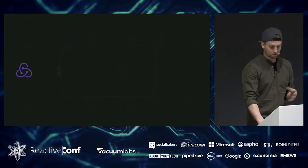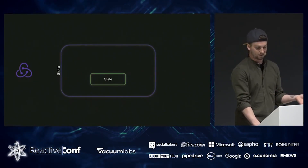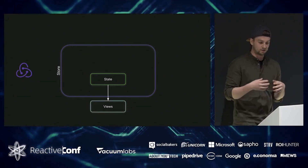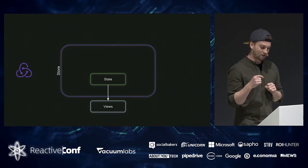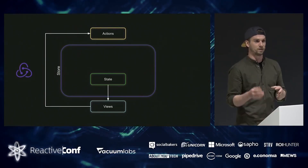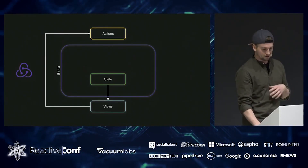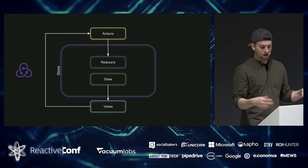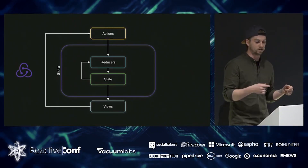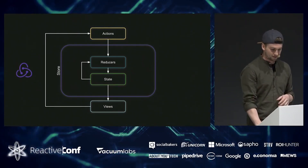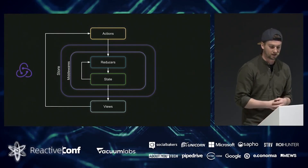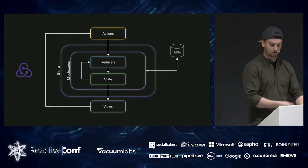Going to Redux — you have stores, and in those stores you have your state. Components can define selectors to access a certain part of your state, and each component can trigger actions with a type and a payload. That action goes into a reducer, the reducer gets the current state and updates it according to the action type and payload. You can also define middlewares, and you can call external APIs via those middlewares.